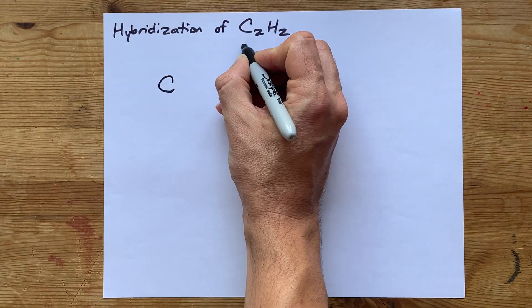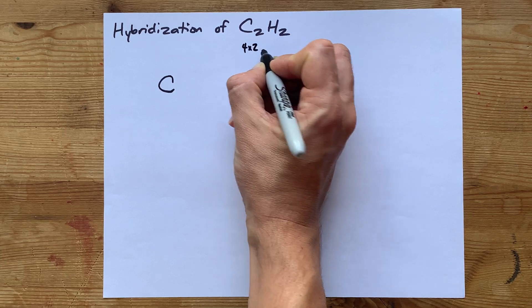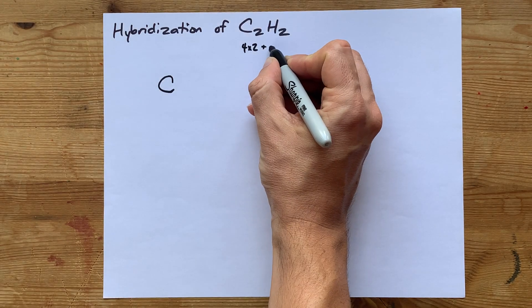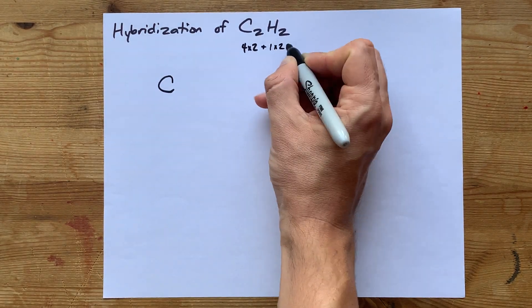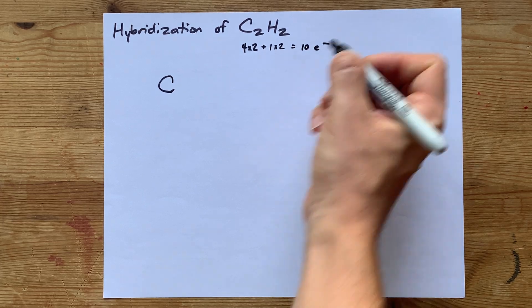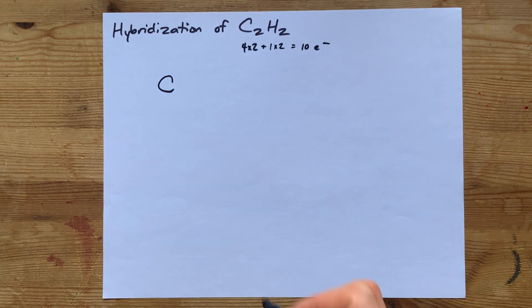And there's two of them, so that's four times two valence electrons. And hydrogen in group 1 brings one valence electron each, and there's two of those as well. Eight and two make 10 valence electrons that we're going to have to disperse over the Lewis diagram.